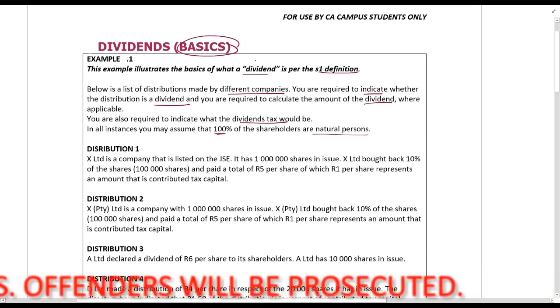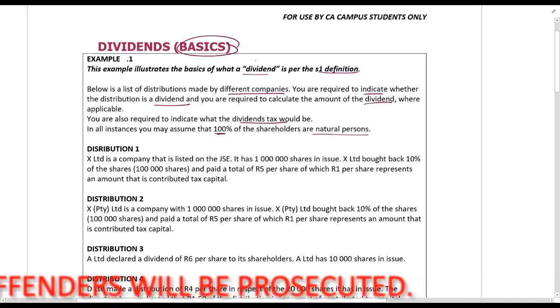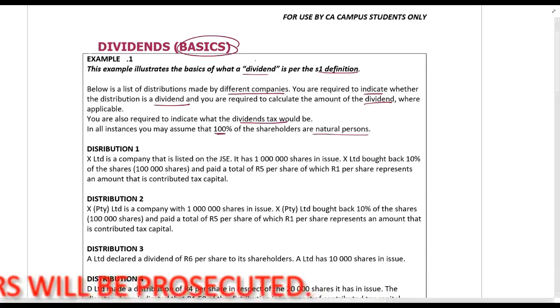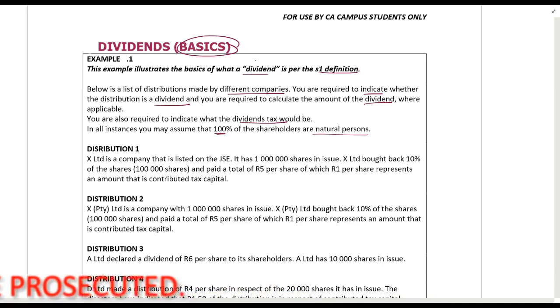You may assume that 100% of the shareholders are natural persons. That's important. Section 64F tells us situations where the shareholders will not be liable for dividends tax. For example, if the shareholder is a South African company, there's no dividend tax. If you are a natural person, there will be dividends tax. In all instances, the shareholder does not stop this from being a dividend.